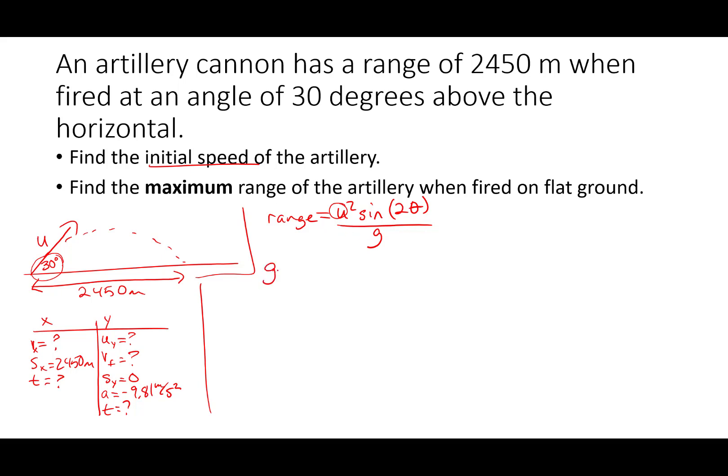Multiply both sides by g, I get g times range equals u squared sine of 2 theta. Divide both sides by sine of 2 theta, I get g times range over sine of 2 theta equals u squared. And then I take the square root of both sides. I get u equals the square root of g times range over sine of 2 theta.